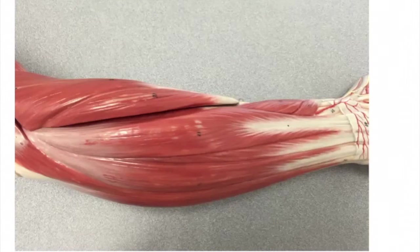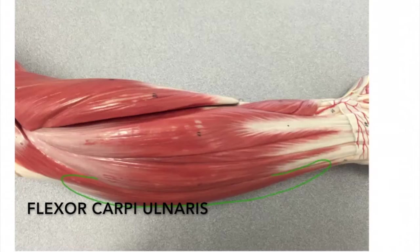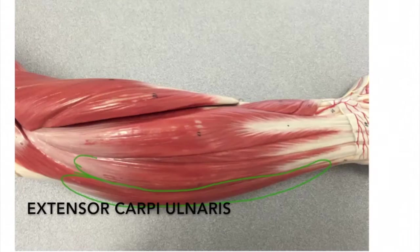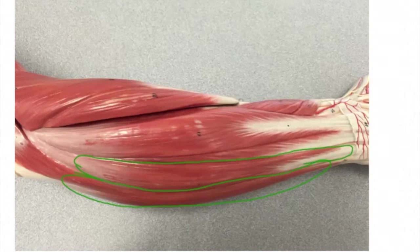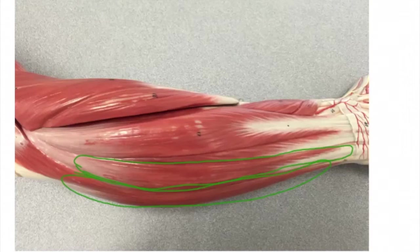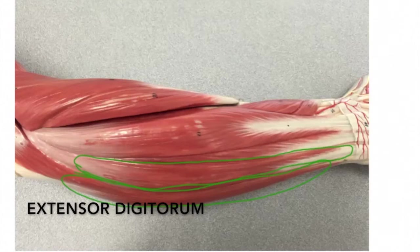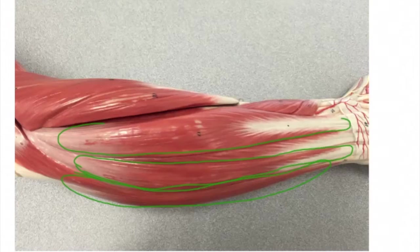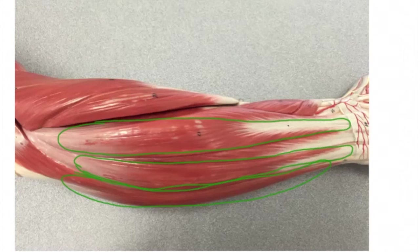We have rotated the model to see the posterior muscles of the forearm. Here along the pinky side is the flexor carpi ulnaris. Next to that is the extensor carpi ulnaris. The extensor carpi ulnaris has an origin at the lateral epicondyle of the humerus and inserts to the 5th metacarpal; the action is to extend the wrist. Next to that is the extensor digitorum, whose origin is also the lateral epicondyle of the humerus. The insertion is the proximal and middle phalanges of digits 2 to 5, and the action is extension of those digits.